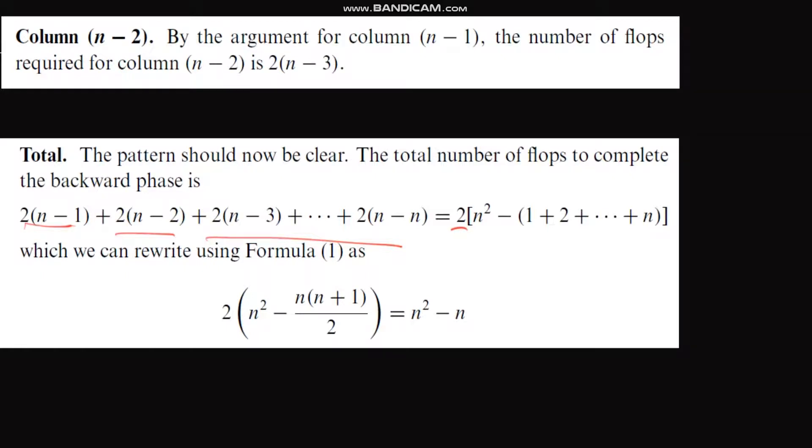Okay, so we continue our remaining part. When we took this 2 common, what do we get? Let me show you this thing here at the bottom. When we took 2 common, we have n minus 1, then plus n minus 2, then plus n minus 3, all the way up to...